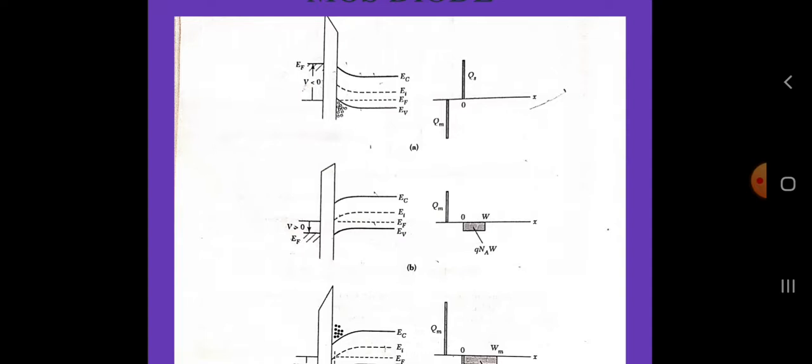Initially the surface is at a weak inversion condition since the electron concentration is small. As the bands are bent further, eventually the conduction band edge comes close to the Fermi level. The onset of strong inversion occurs when the electron concentration near the silicon dioxide-silicon interface is equal to the substrate doping level. After this point, most of the additional negative charges in the semiconductor consist of the charge Qn in a very narrow n-type inversion layer lying between zero and xi, where xi is the width of the inversion region. Typically the value of xi ranges from 1 to 10 nanometers and is much smaller than the surface depletion layer width.